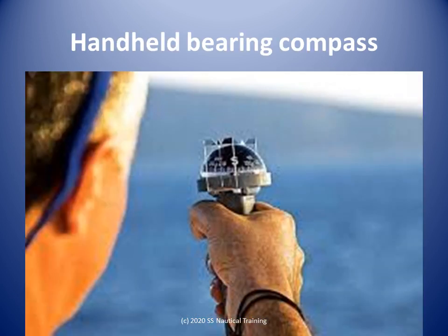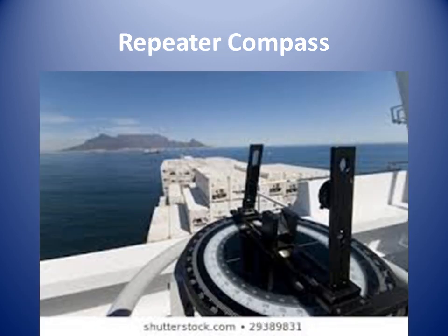A handheld compass helps the navigator to take bearings of distant objects that can be corrected to true and plotted on a nautical chart to create position lines. There is always a compass at the steering position. On small vessels that is likely to be the only compass. On larger vessels there might be repeater compasses away from the steering position, for example on the bridge wings.